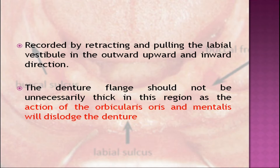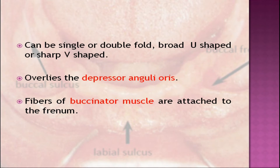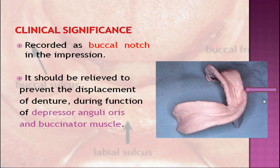The buccal frenum is a fold or folds of mucous membrane extending from the buccal mucous membrane reflection to or towards the slope or crest of the residual ridge, in the region just distal to the cuspid eminence. This membrane can be a single or double fold, broad U-shaped or sharp V-shaped. The reflection is in the anterior-posterior direction. It overlies the depressor anguli oris; the fibers of the buccinator muscle are attached to the frenum. It is recorded as a buccal notch in the impression.